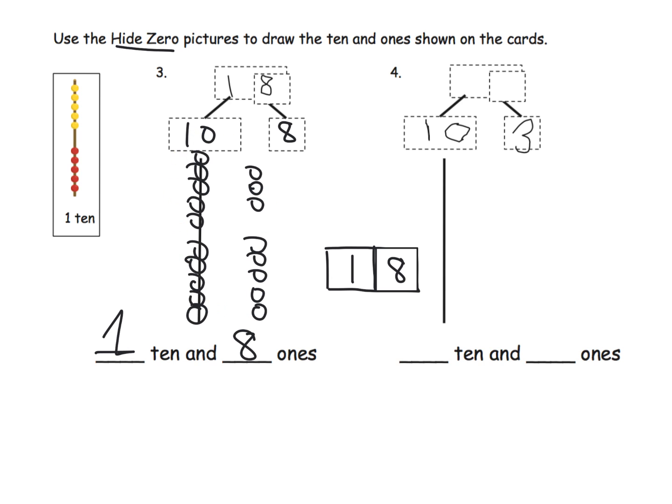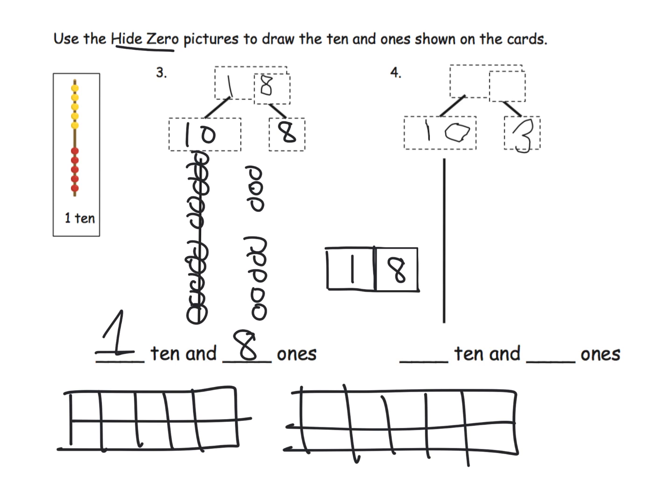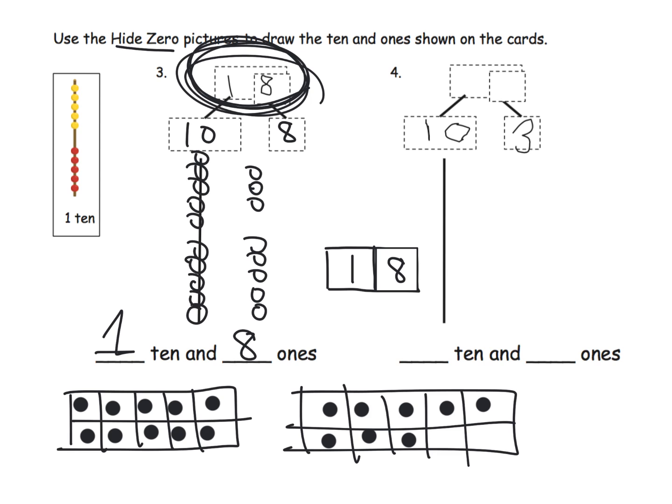Now, parents and teachers, what do you do if you don't have rekenreks? What do you do if you don't have hide zero cards? No problem. Replace all of this with 10 frames. You can do the entire thing with 10 frames and you can model everything with 10 frames. The idea would be, if you have 18 and we want to model that, well, what would 18 look like? It would look like 1, 2, 3, 4, 5, 6, 7, 8, 9, 10. 1, 2, 3, 4, 5, 6, 7, 8. So it would look like one 10 plus eight ones. And that's it. So you could do this entire lesson using 10 frames for free rather than purchasing rekenreks or making your hide zero cards.